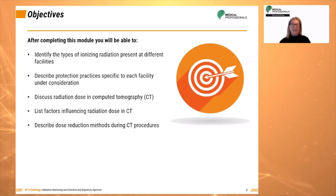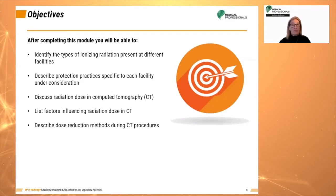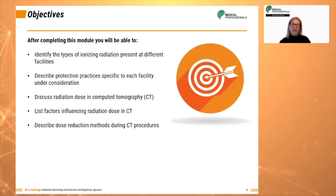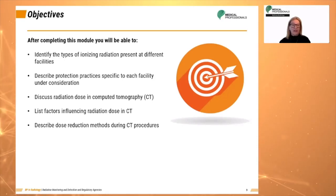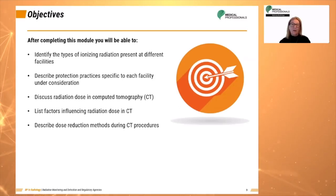After completing this module, you should be able to identify the types of ionizing radiation that are present, describe protection practices specific to each facility under consideration, discuss radiation dose in computed tomography, list factors influencing radiation dose in CT, and describe dose reduction methods during CT procedures.